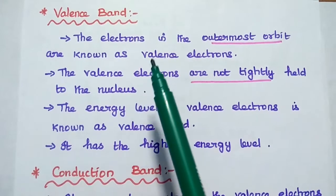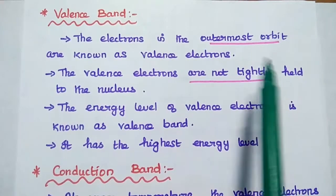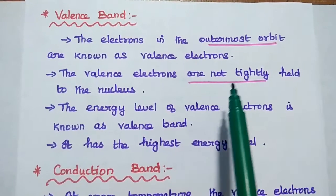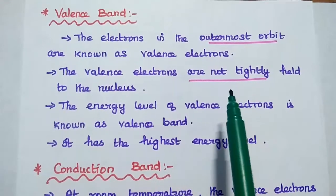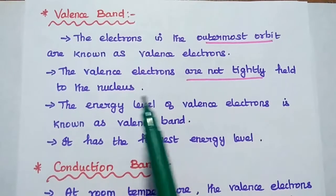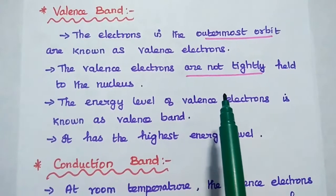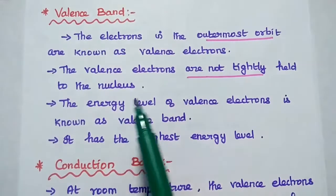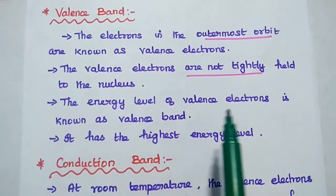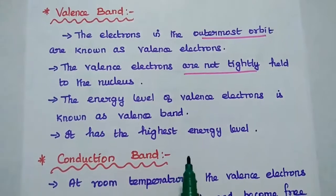Let's discuss each band in detail. The electrons in the outermost orbit of an atom are known as valence electrons. These electrons are not tightly held up to the nucleus of the atom. That means, at room temperature, these valence electrons leave from the orbit and become free electrons, since they are not tightly held to the nucleus.